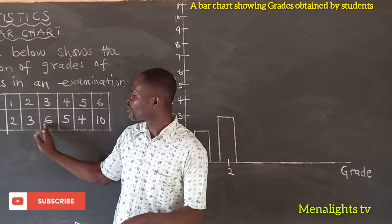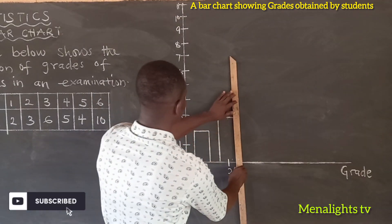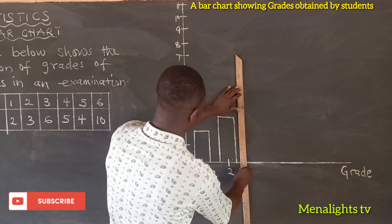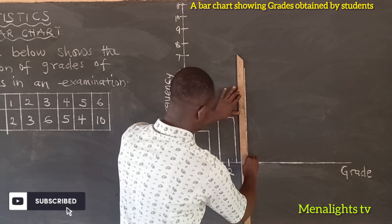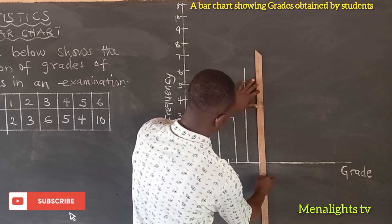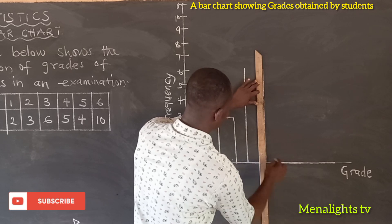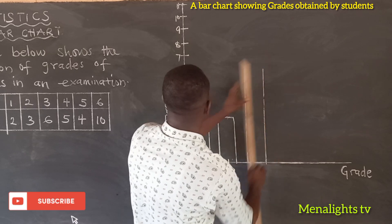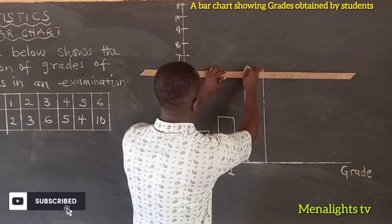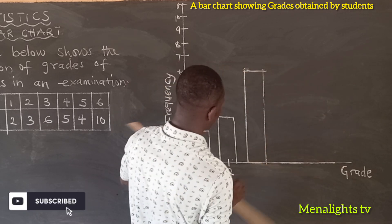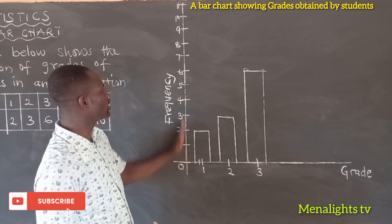And when we come to grade 3, 6 students were obtain the grade 3. So because of that, we draw it to where we have the 6. So this is my grade 3, which is having a frequency of 6.